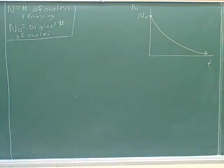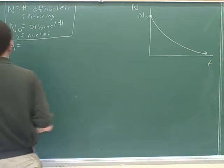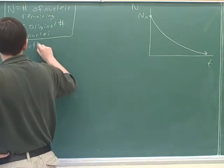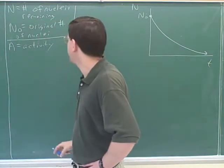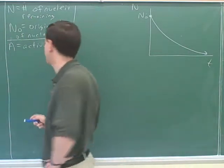Another important concept is the radioactivity, or the activity of the sample. The symbol for that is A. That's the activity, or the radioactivity. And that tells you how many decays are happening per second.